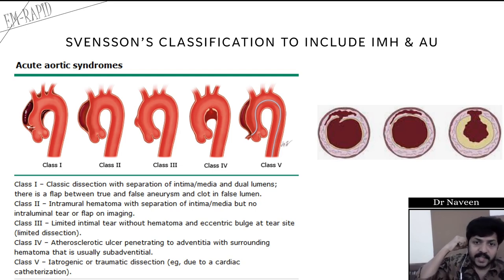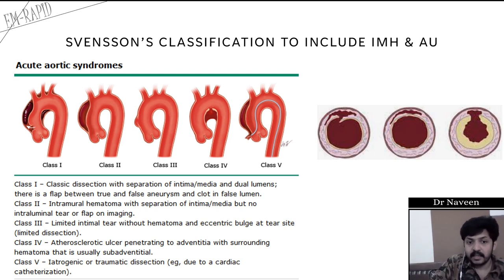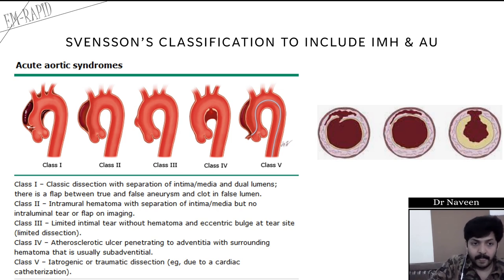Swenson's classification was developed to include intramural hematoma and penetrating aortic ulcer, which were not included in Stanford or DeBakey. Class 1 shows an intimal tear with classic dissection — separation of tunica intima and media creating two lumens with a visible flap. Class 2 is intramural hematoma — separation of intima and media but no intimal tear, with blood collection and clot inside the tunica media.